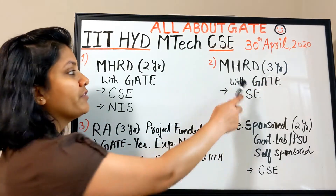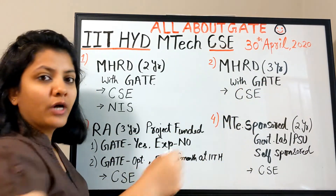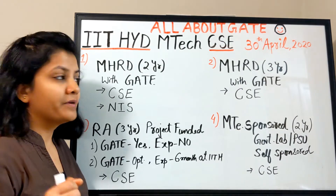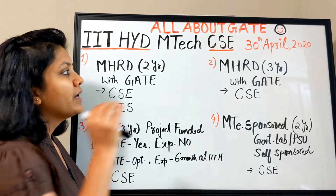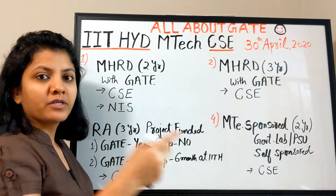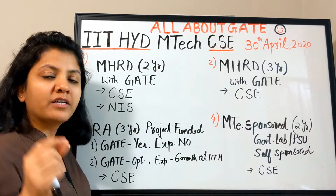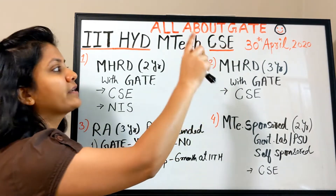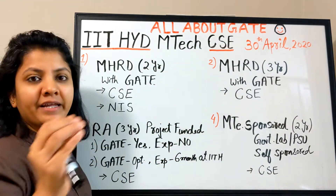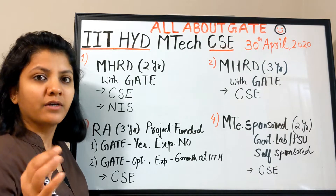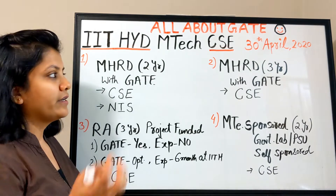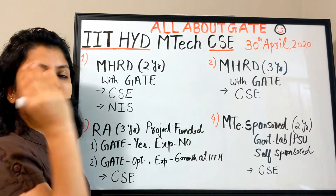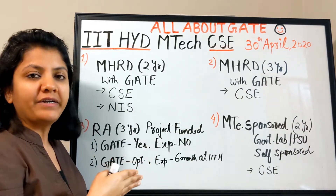The second category is MHRD three-year with GATE. Again, the GATE exam is compulsory and it is MHRD-sponsored, so you receive a stipend from MHRD. You can consider it as an MTech three-year RA category where you will be funded by MHRD for three years.